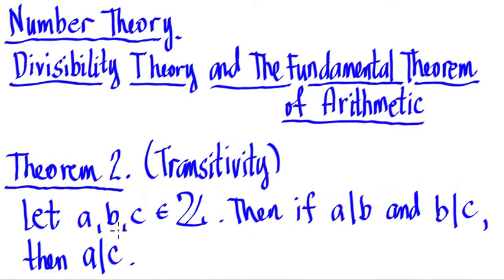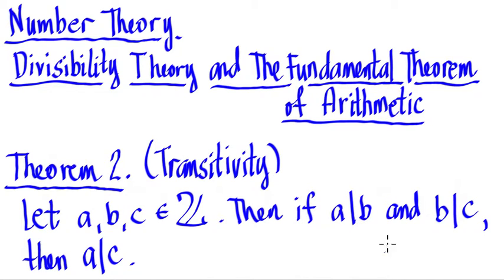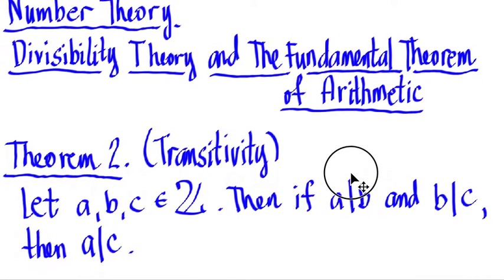Let A, B, and C be integers. Then if A divides B and B divides C, then A divides C. Just like in our transitivity property — if A is B and B is C, therefore A is C. Somehow the same concept: if A is a factor of B and B is a factor of C, therefore A is a factor of C. So let's give a proof for that.